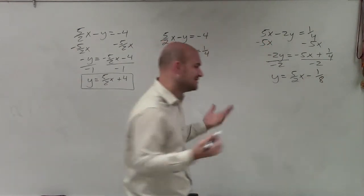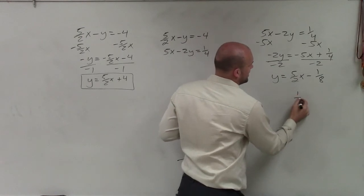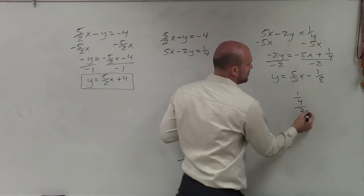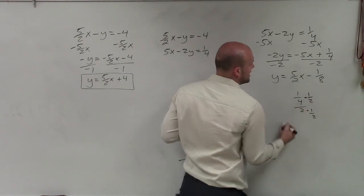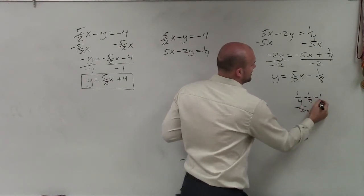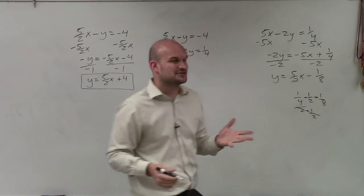Now, you might say, well, how'd you get 1 eighth? I'll just go through this real quick. If I have 1 fourth divided by 2, multiply by the reciprocal to get rid of your denominator. But you have to make sure you multiply the top and the bottom. So therefore, that equals 1 eighth. Just a little fraction review for you.